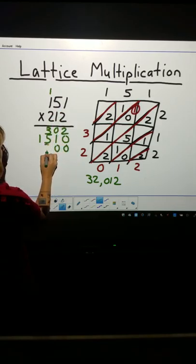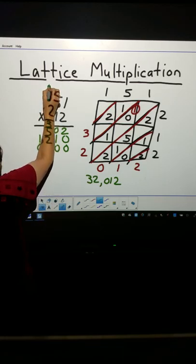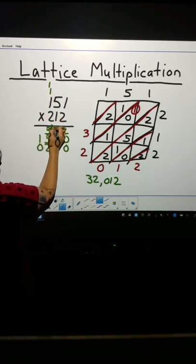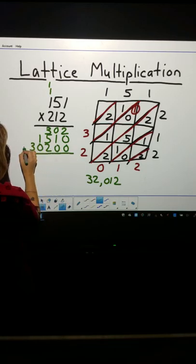2 times 1 is 2. 2 times 5 is 10. Regroup. 1 times 2 is 2, plus 1 is 3. Ready to add.